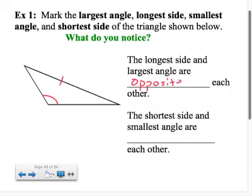The way it's written here, you'd say opposite each other. Oftentimes I'll just say across from each other, same idea. The smallest angle here appears to be this one, and the smallest side appears to be this guy. So what you notice is the shortest side and the smallest angle are opposite each other.